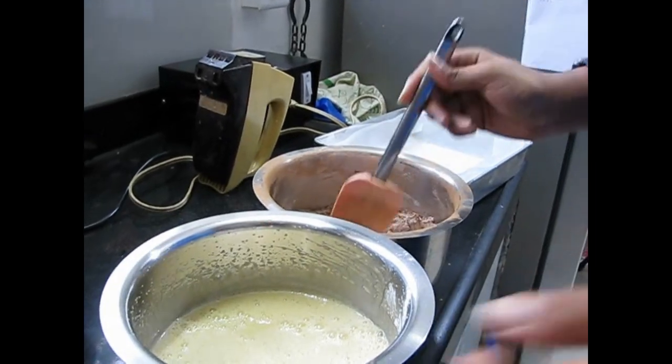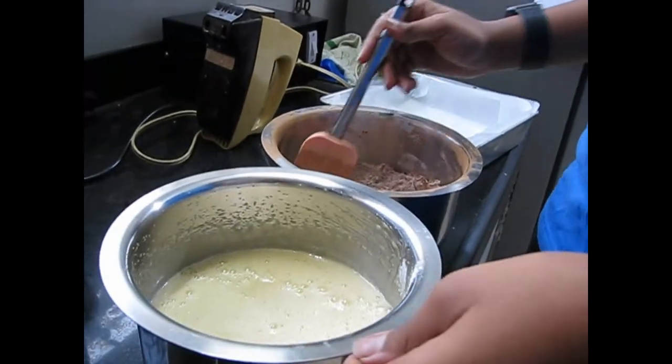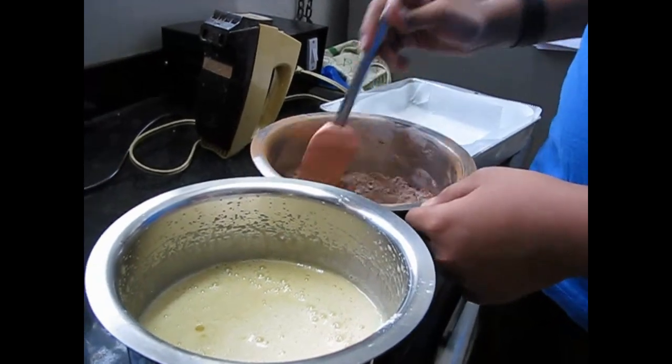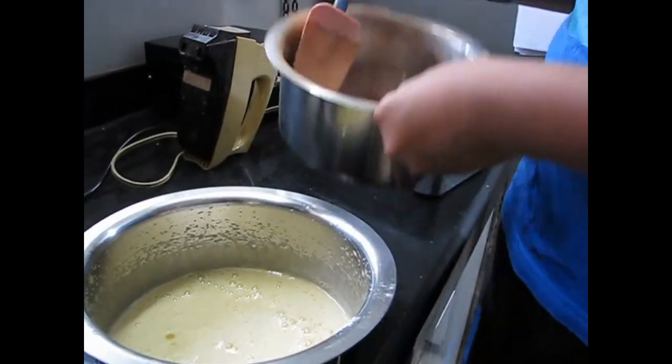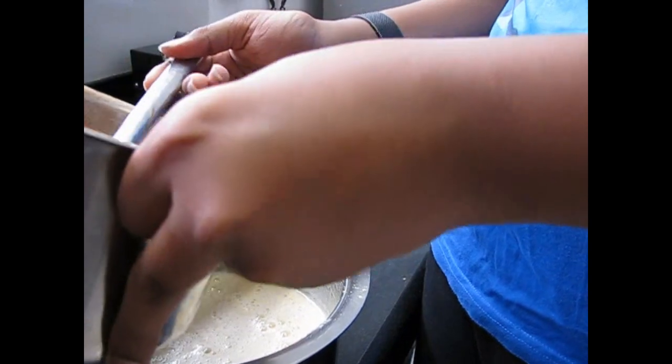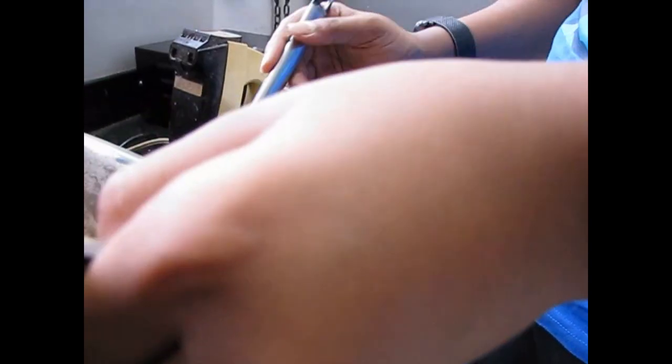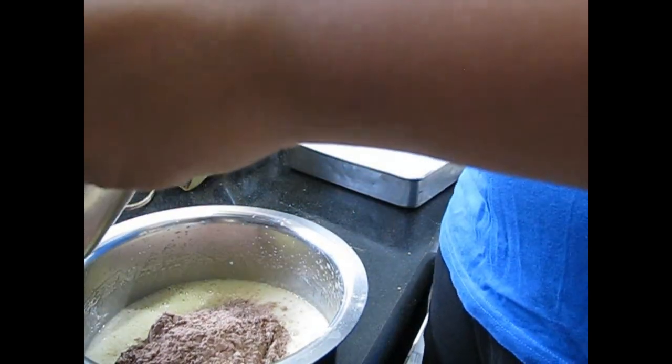We have been beating this for a long time now, about two minutes, and now it is time to add the dry ingredients. While adding the dry ingredients, please do not use the whisker machine, because then your cake won't be that good. Just use a spatula and whisk it around.